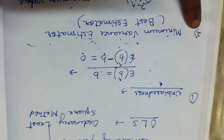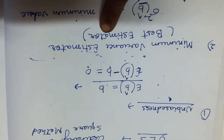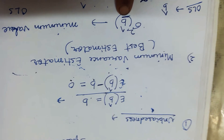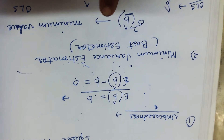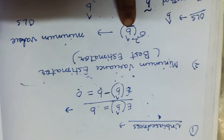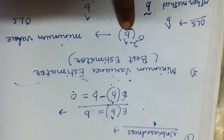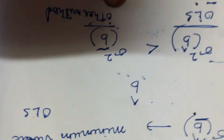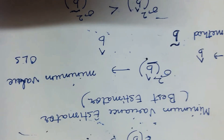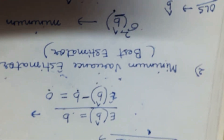The next property is minimum variance estimator, also known as the best estimator. It means the variance of the estimated value is minimum compared to other methods. Suppose we calculate the b value through OLS — Ordinary Least Squares method. There are certain other methods to calculate the value of b. If the variance of b-hat using OLS is less than the variance of b calculated by another method, then the estimator is called the best estimator.